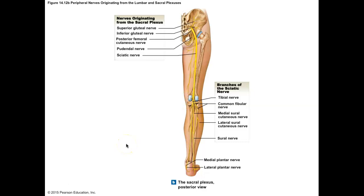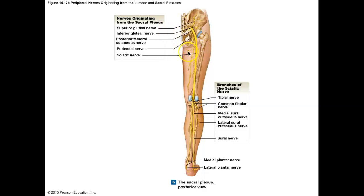The pudendal nerve is a small nerve that curves into the genitals. It serves the muscles of the pelvic floor — when you hold your urine and squeeze those muscles, that is served by the pudendal nerve. If you have problems with this nerve, you're going to be incontinent. Another interesting fact is that this nerve can be blocked during childbirth, because blocking it takes sensation away from the genital region of the body.